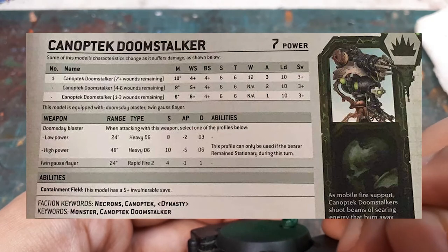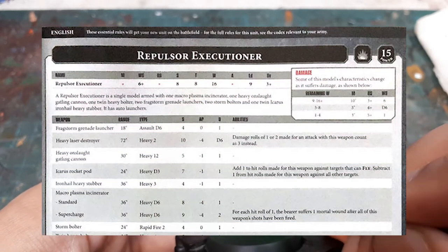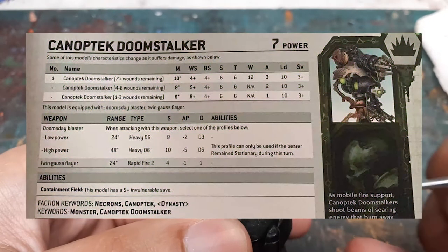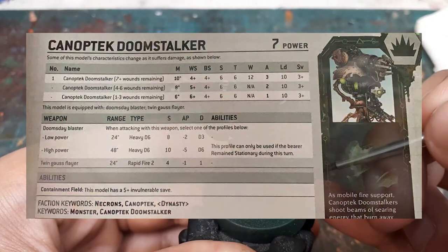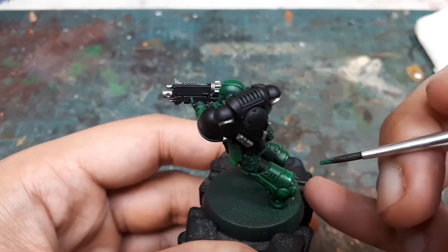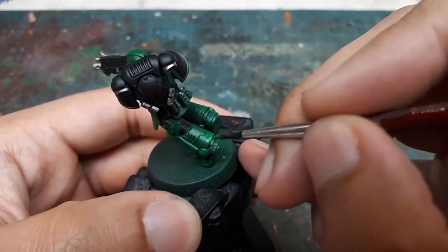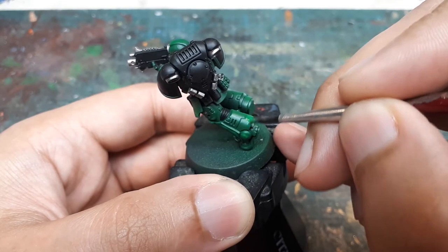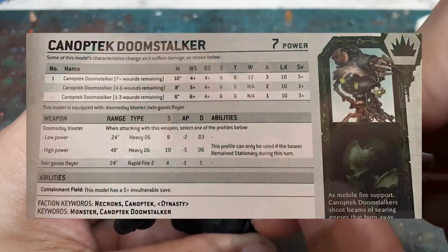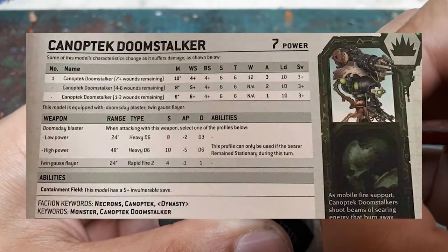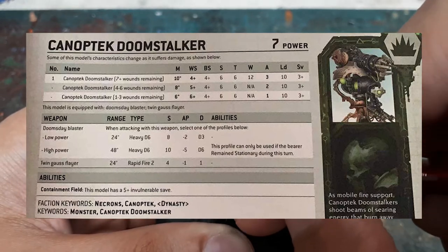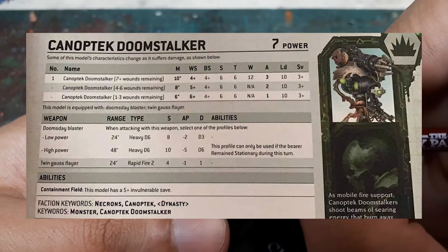Gone is the chart off to the side that you need to cross-reference, which was present in 8th edition datasheets. Instead you simply read down across the stats. Units which degrade are almost always single model units, so they have the space available on the datasheet.